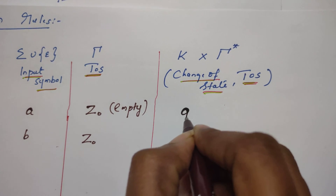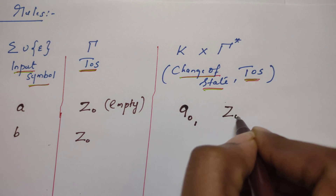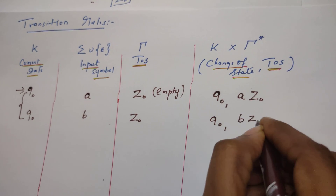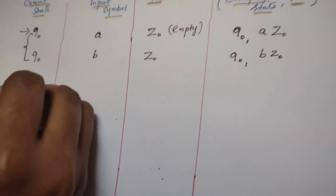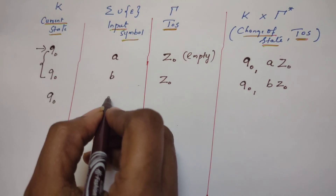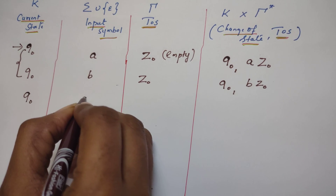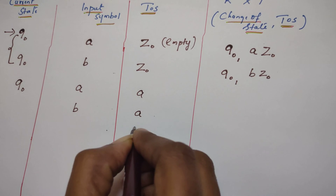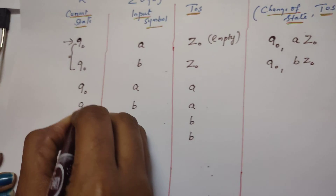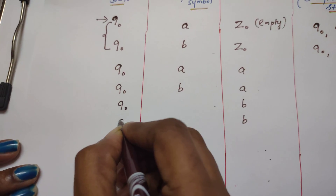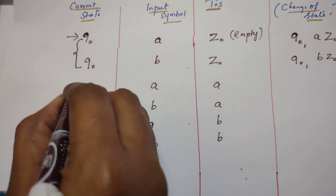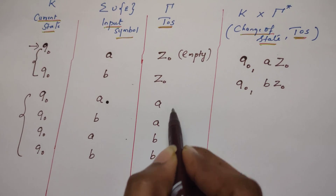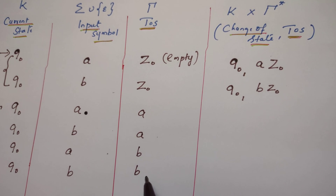In this configuration, the PDA continues to stay in Q0 by pushing the symbol it reads onto the stack: if it reads A, push A; if it reads B, push B. At the next step, still in Q0, the second symbol may be A or B, and the top of the stack may also be A or B, giving four possible input configurations.